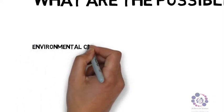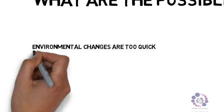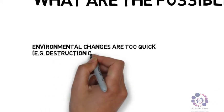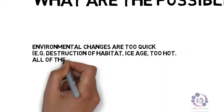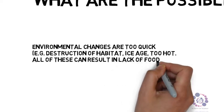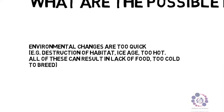First of all, there could be environmental changes that happen too quickly, for example the destruction of a habitat, the ice age, it becoming too hot resulting in lack of food, or too cold to breed.